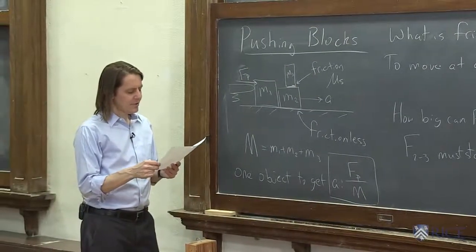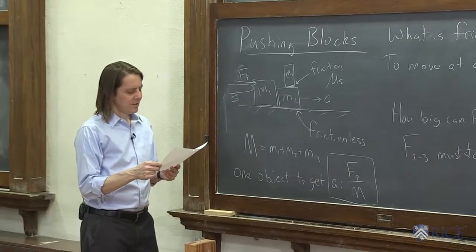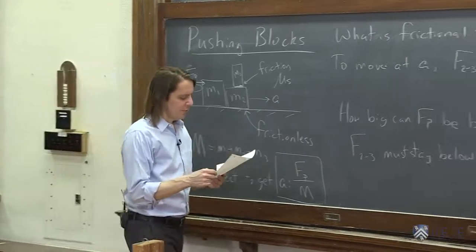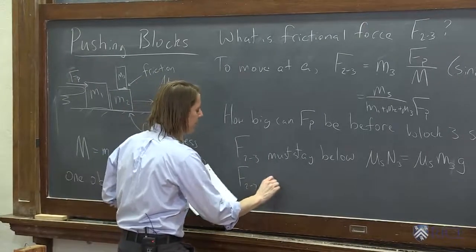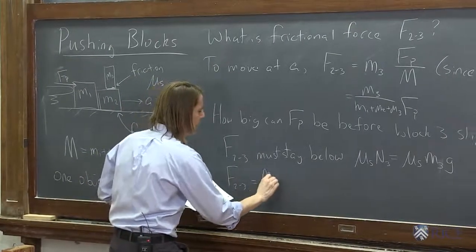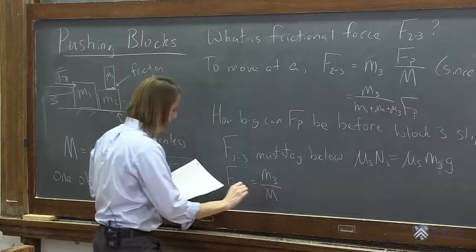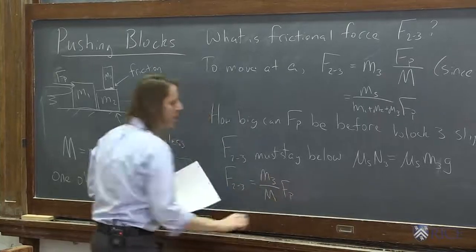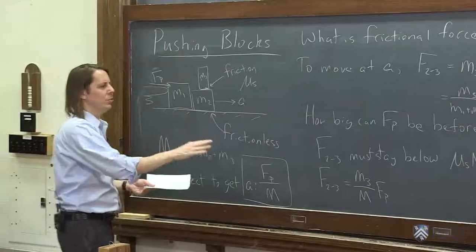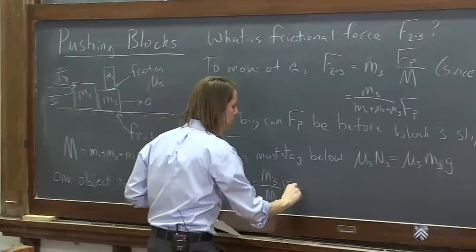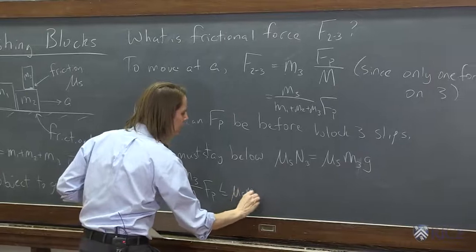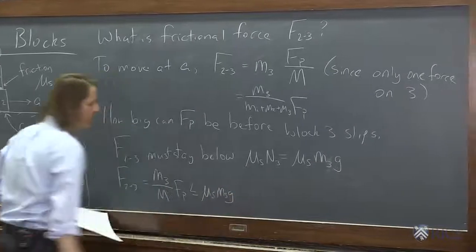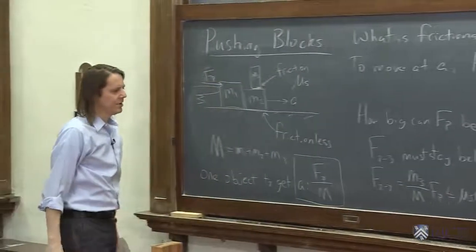So with that, you could say then that the force of 2 on 3, remember it was M3 over the total M times Fp. We're saying that must be less than or equal to mu static M3 g. That has to be the case.